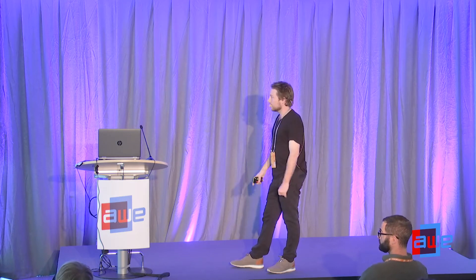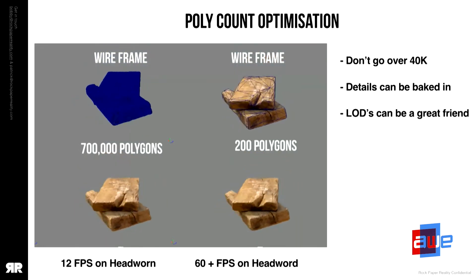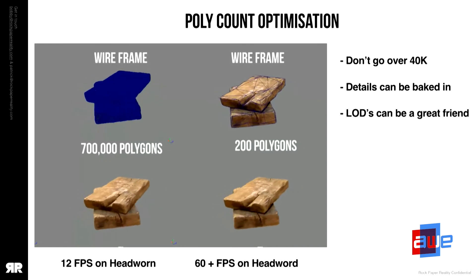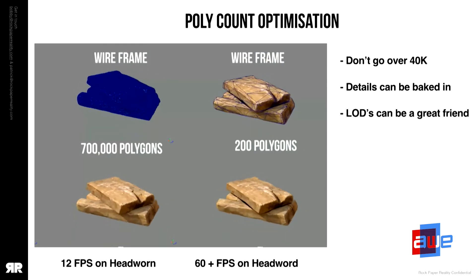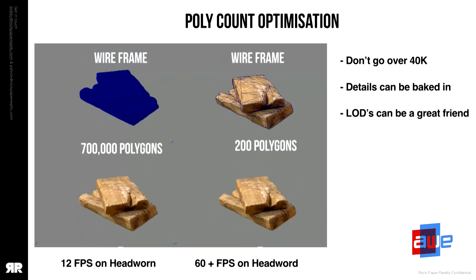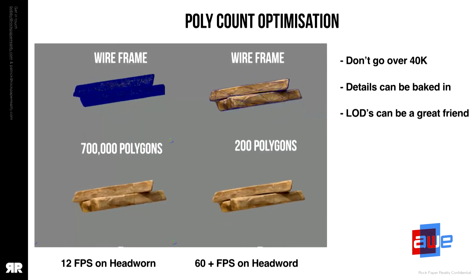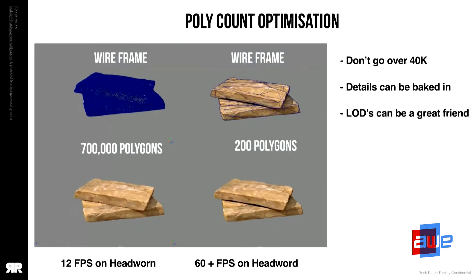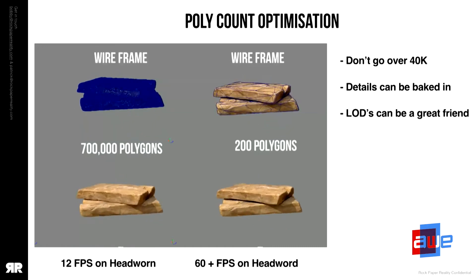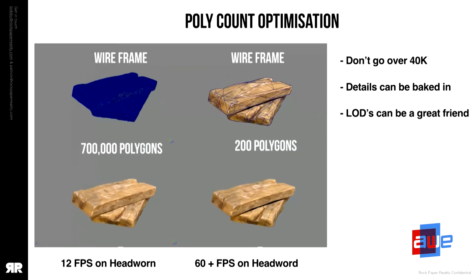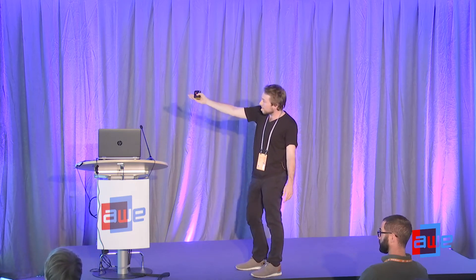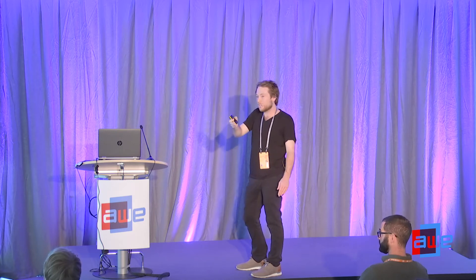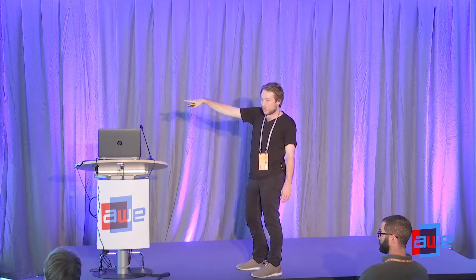This is a production-level asset of about 700,000 polygons — running on a head-worn device I was getting about 12 frames per second. With an optimization strategy I was able to get it down to about 200 polygons, and if you look closely, you probably don't see any difference in the look and feel. That 200-polygon asset runs 60-plus on mobile. The wireframe shows minimal lines outlining basic detail, but the baking strategy means no visible difference in quality — and that's key.